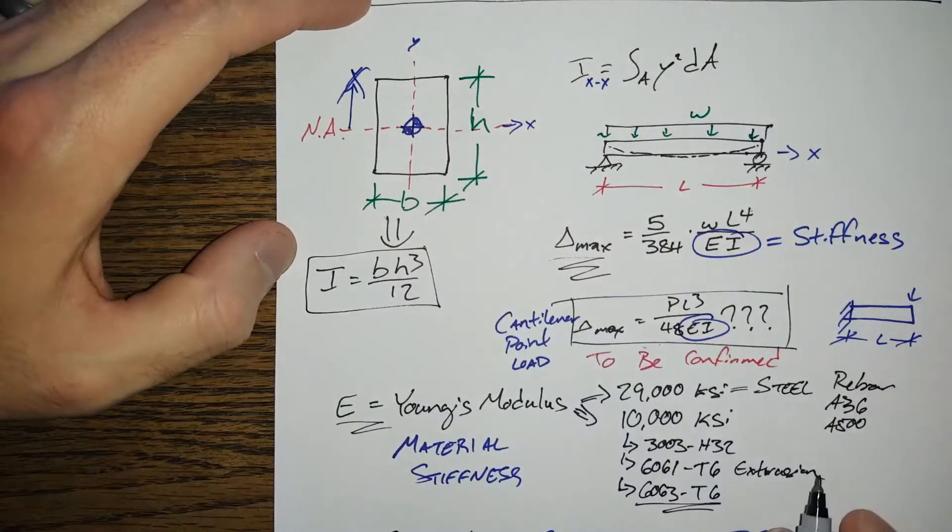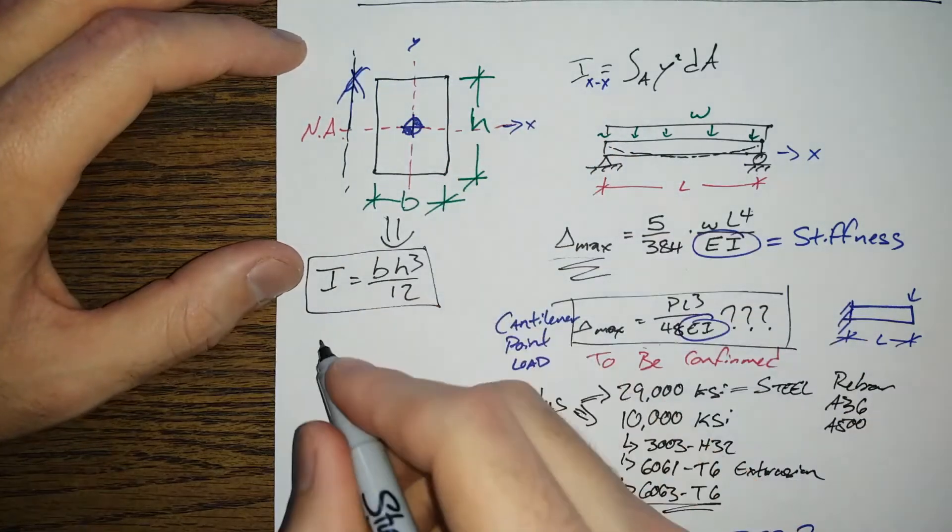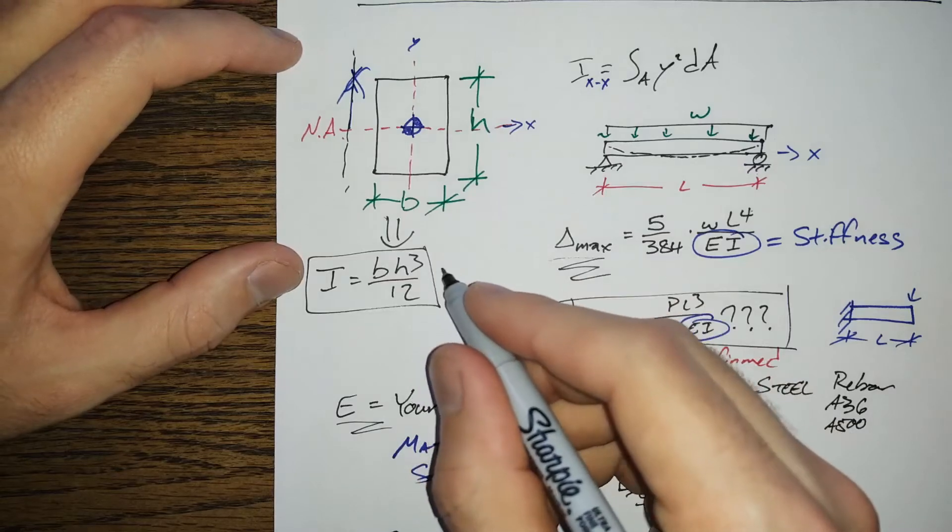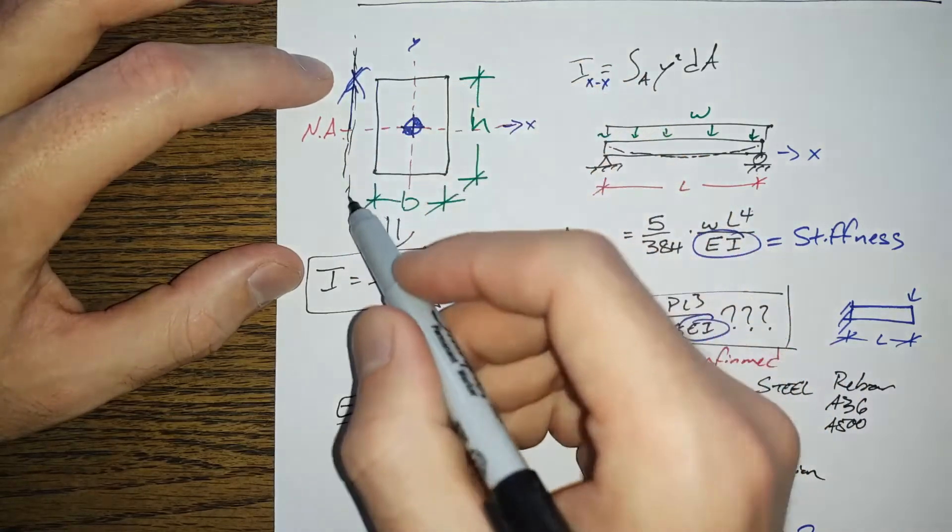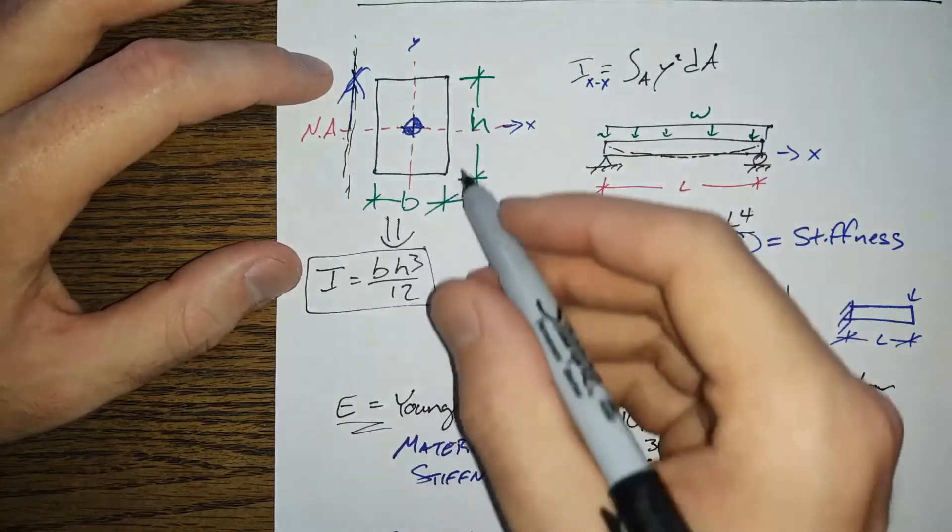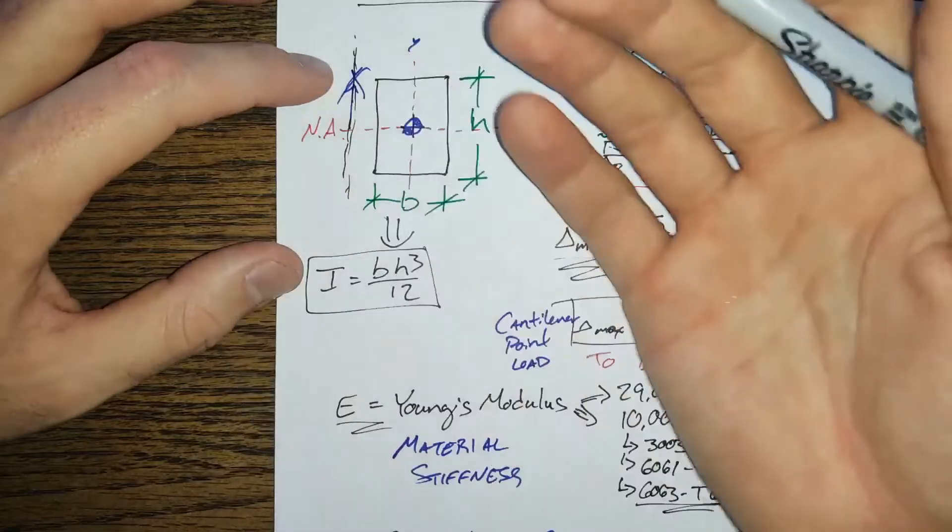And that's just how that is used. If it's about some axis over here that's further away, then there would also be an area term. So if we were trying to take it about this axis, we're switching around the b and the h because we're going this way instead of this way.